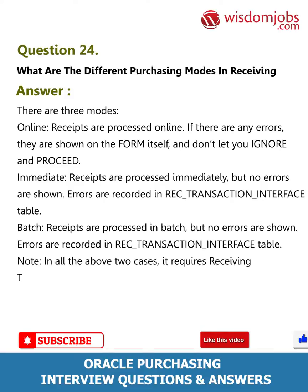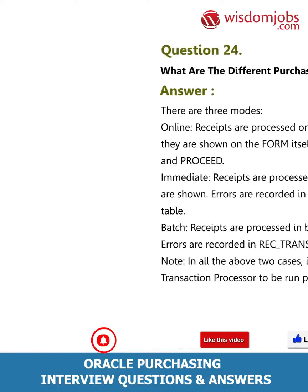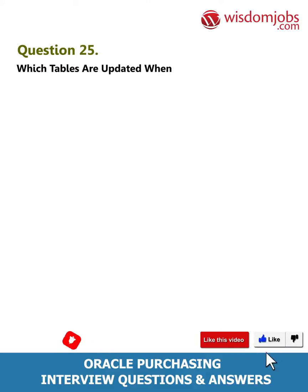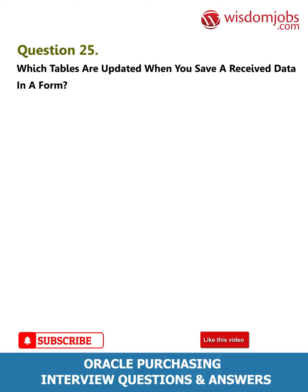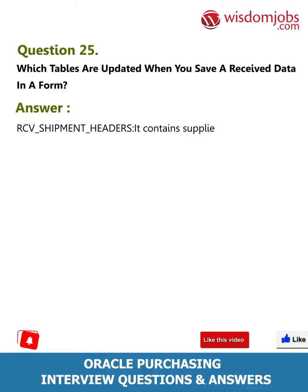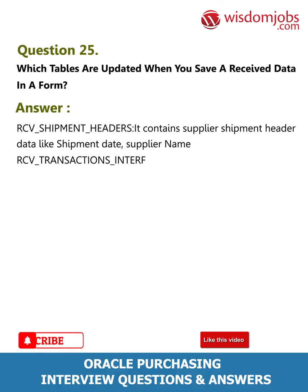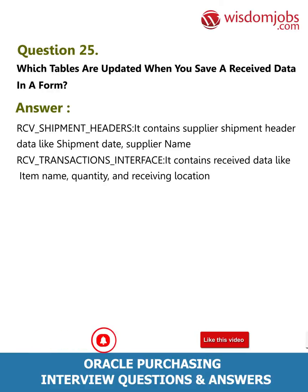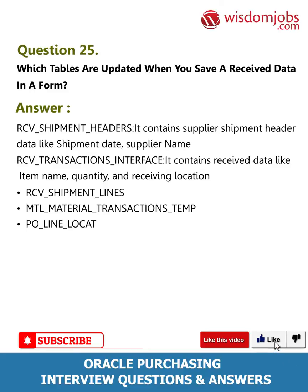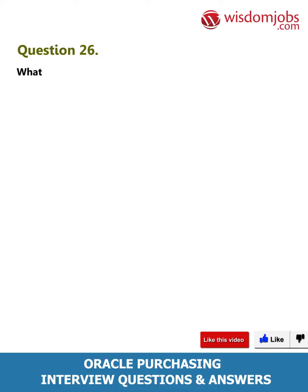Note: In the immediate and batch modes, it requires the Receiving Transaction Processor to be run periodically. Question 25: Which tables are updated when you save received data in a form? Answer: RCV_SHIPMENT_HEADERS (contains supplier shipment header data like shipment date and supplier name), RCV_TRANSACTIONS_INTERFACE (contains received data like item name, quantity, and receiving location), RCV_SHIPMENT_LINES, MTL_MATERIAL_TRANSACTIONS, PO_LINE_LOCATIONS_ALL, and PO_DISTRIBUTIONS_ALL.